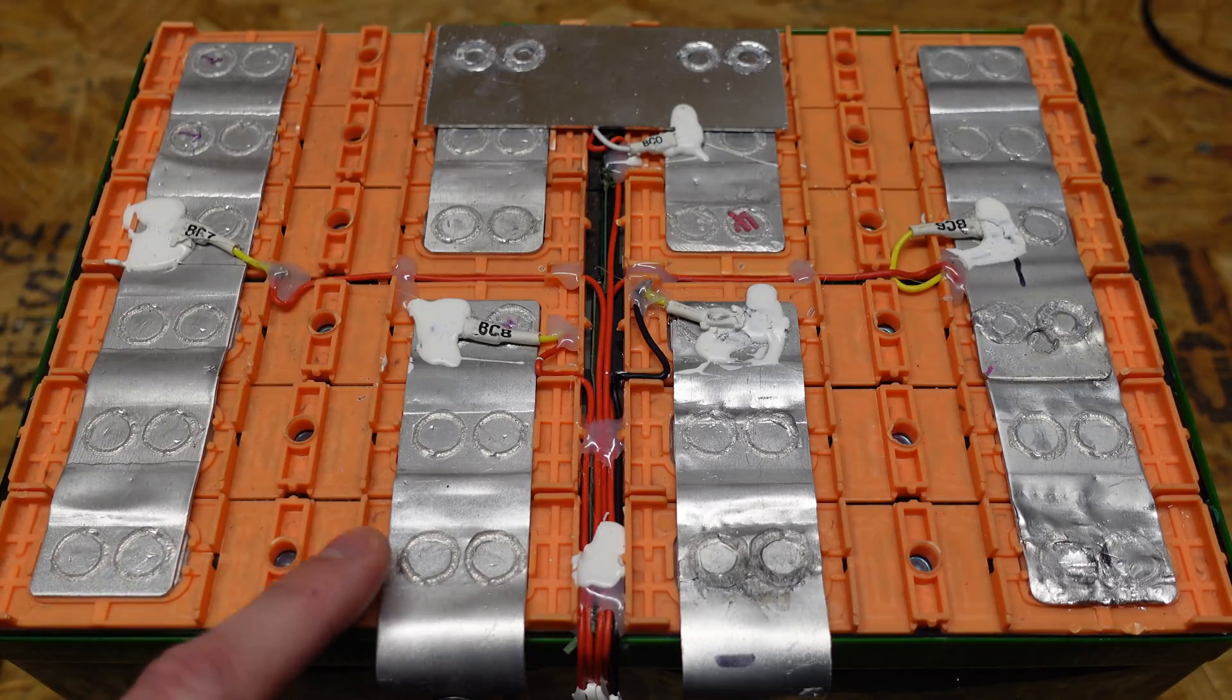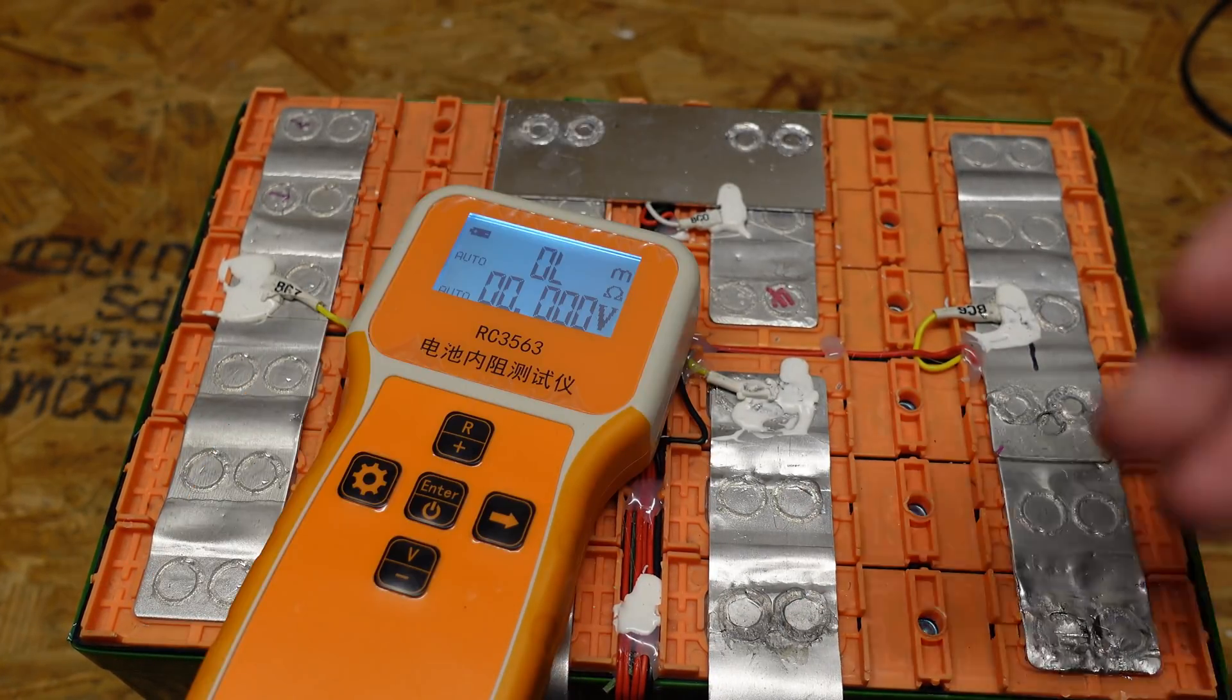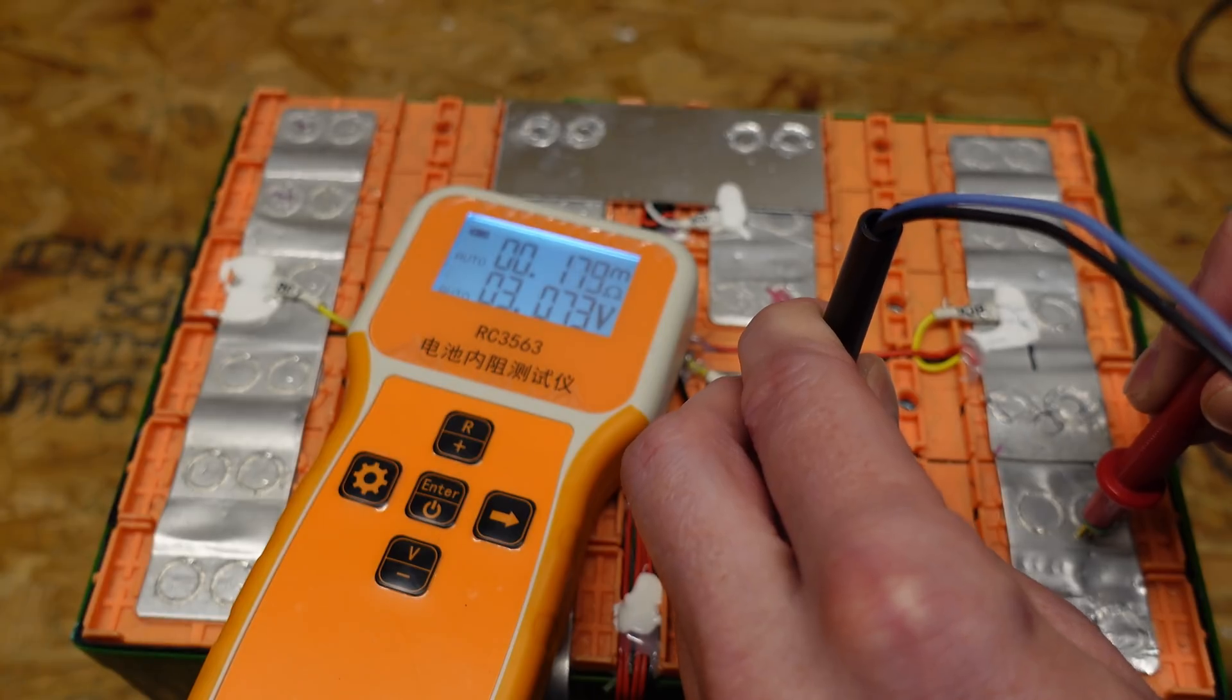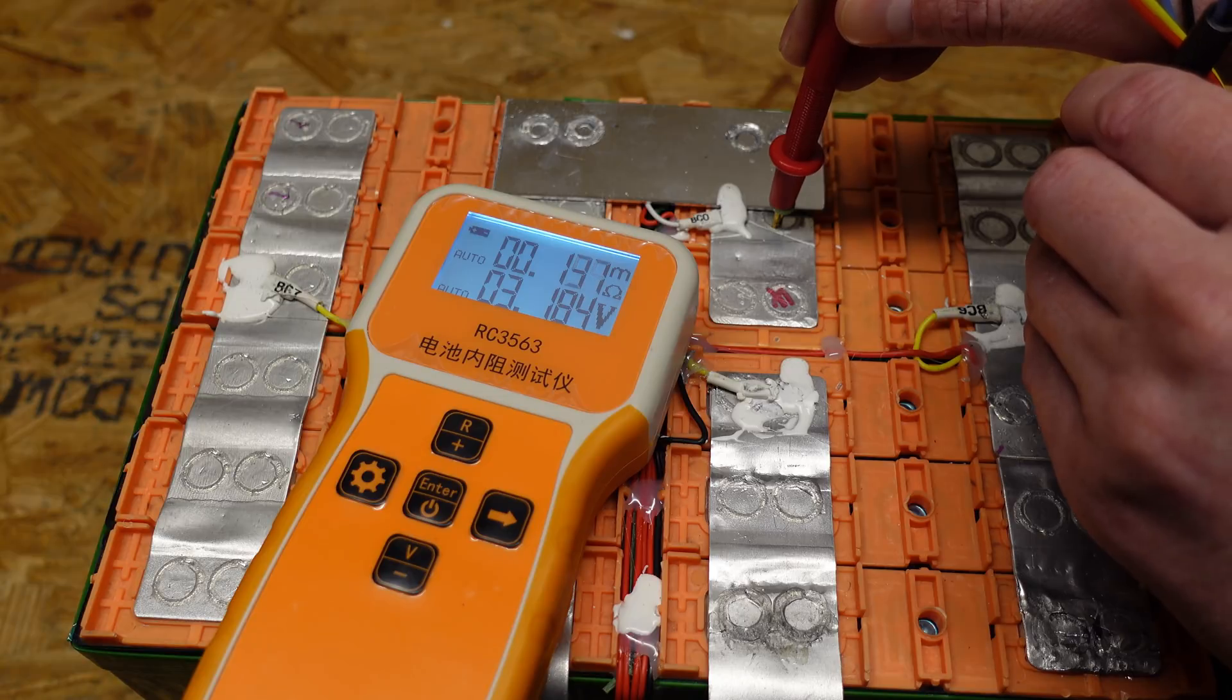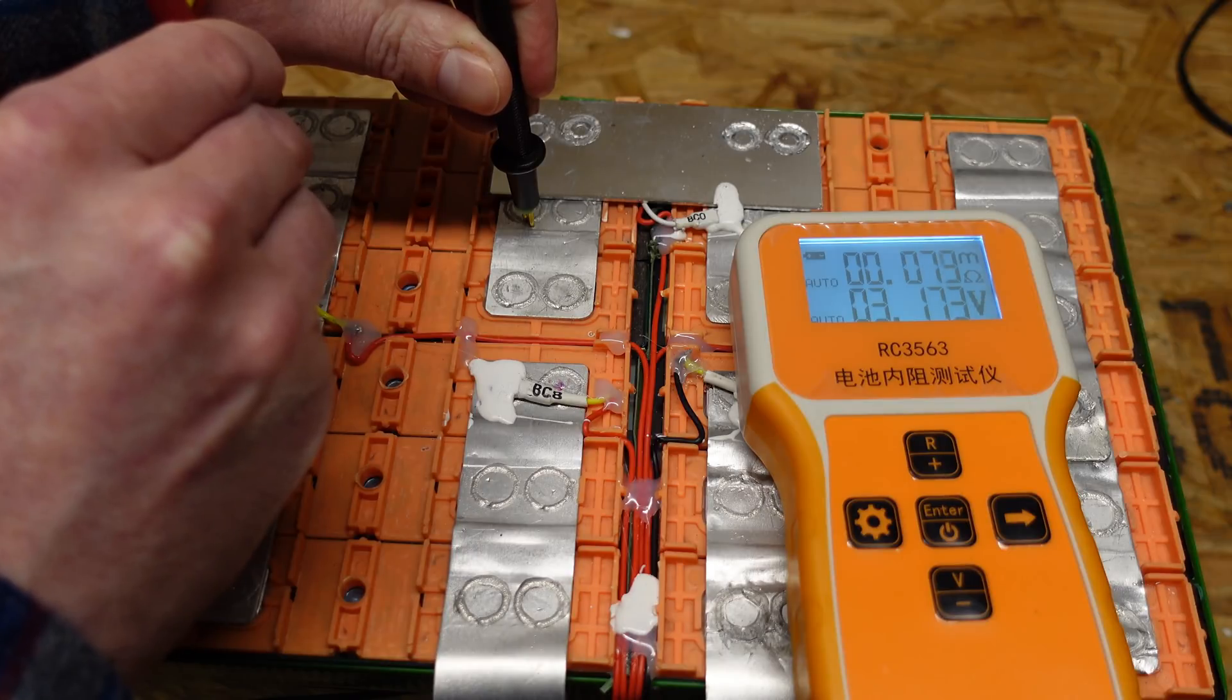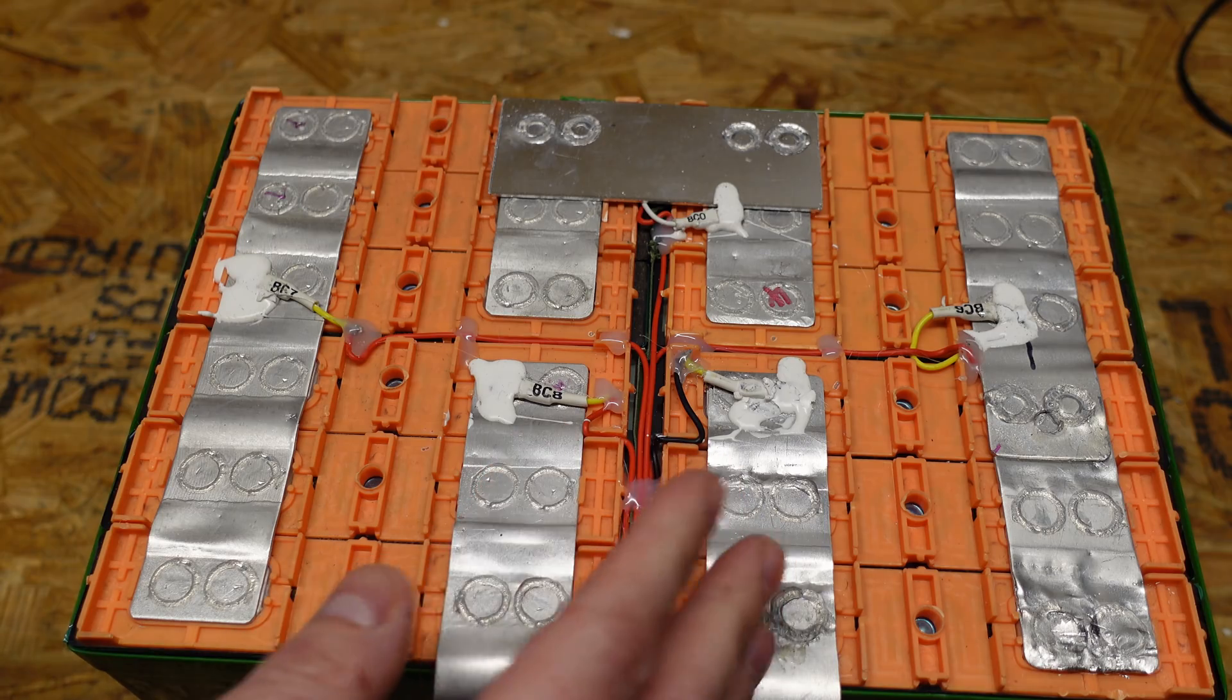But before we do that, a few people did want to know the internal resistance of these cells. Now of course the idea is to measure an individual cell and these cells are in blocks of three, so this won't be the best test, but this will give us an idea comparing the four groupings together. So the grouping that was undervolted is reading 0.17 milliohms, we have 0.13 milliohms, 0.1 milliohms, and 0.07 milliohms. They're fairly close, kind of all over the board, they're not perfectly matched, but they're close enough.